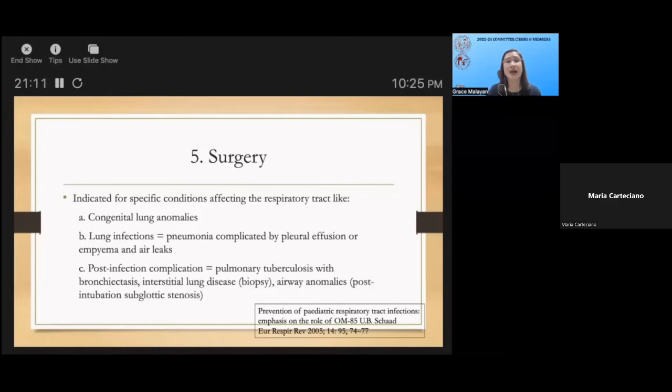I have mentioned bronchiectasis, ILD or interstitial lung diseases for viral causes of pneumonia, airway anomalies or maybe narrowing of the airways after prolonged intubation leading to post-intubation subglottic stenosis. These children may warrant tracheostomy.